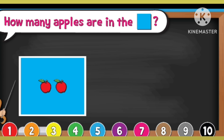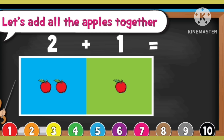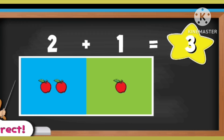How many apples are in the blue square? 1, 2. How many apples are in the green square? 1. Let's add all the apples together. 2 plus 1 equal to 3.